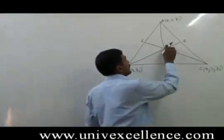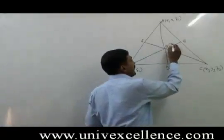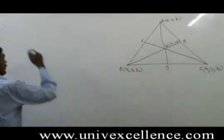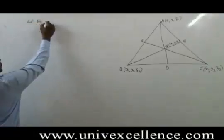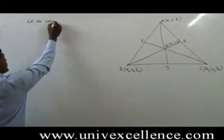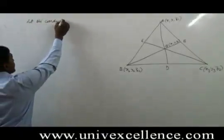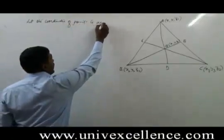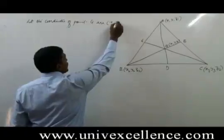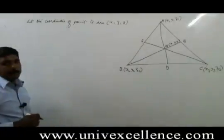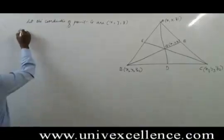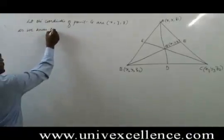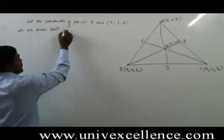Let the coordinates of point G be (X, Y, Z). As we know that G